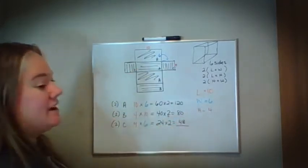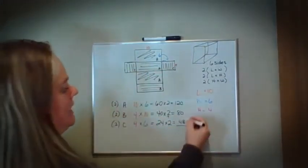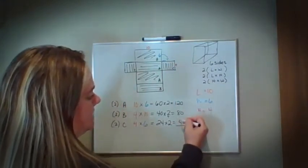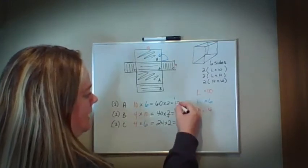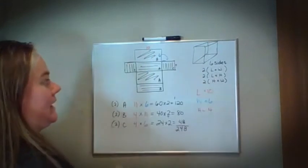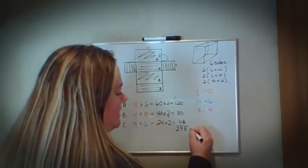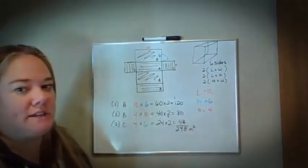Now all I have to do since I'm finding the area is add them all together. Remember, I decomposed it. Now I'm composing it. 8 plus 0 is 8. 8 plus 2 is 10 plus 4 is 14. 1 plus 1 is 2. So all of my area here is going to be 248 inches squared. I believe it was inches.